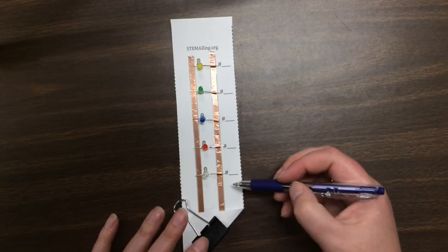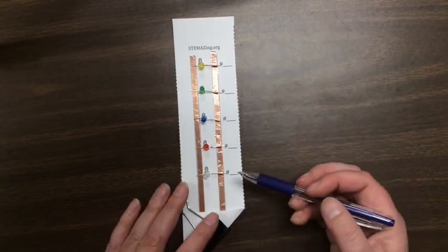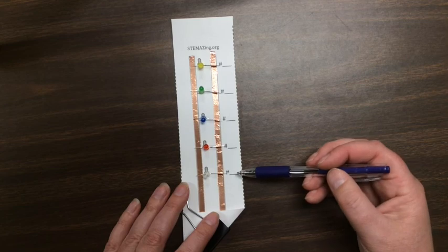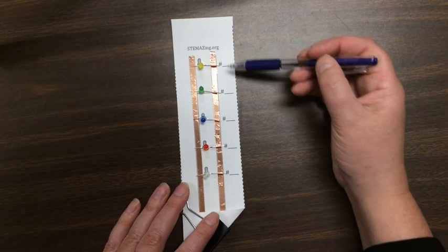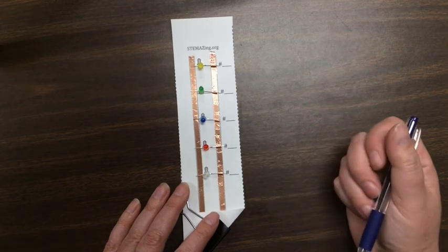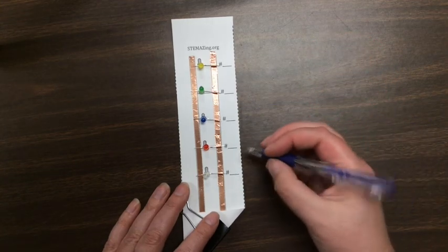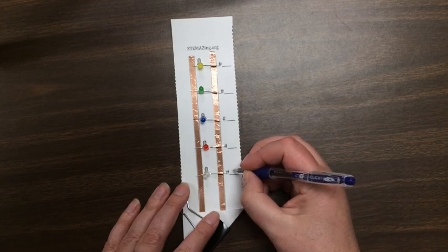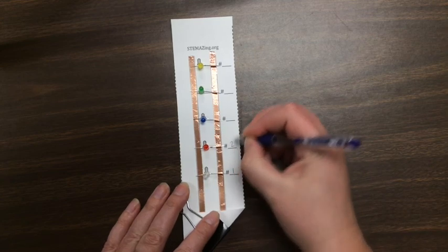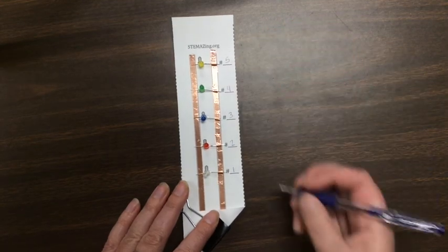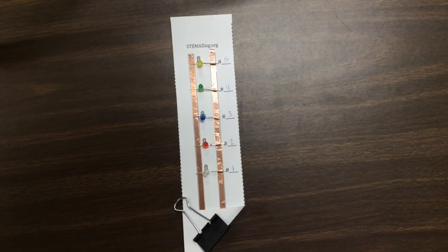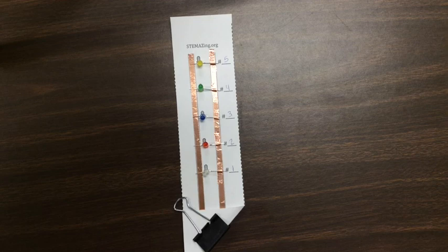And our last final step is to make sure that we number the LEDs. So as a class, you have to decide either to number them one, two, three, four, five, or you could number them one out here, two, three, four, five. But make sure everybody does it the same so that when you're comparing rules, you're talking about the same LEDs. So we'll number ours one, two, three, four, five. And now your perplexing circuit is ready to go. Now it's up to you to figure out what are the rules for how it works. Have fun.